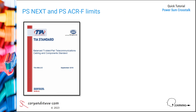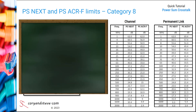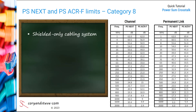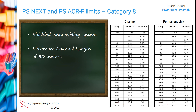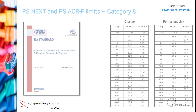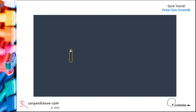And our last stop is category 8, which is a shielded-only cabling system characterized to 2000 megahertz or 2 gigahertz, with a maximum channel length of 30 meters instead of the usual 100, and a maximum permanent link length of 24 meters instead of the usual 90. That's it, we're done — thanks for watching.